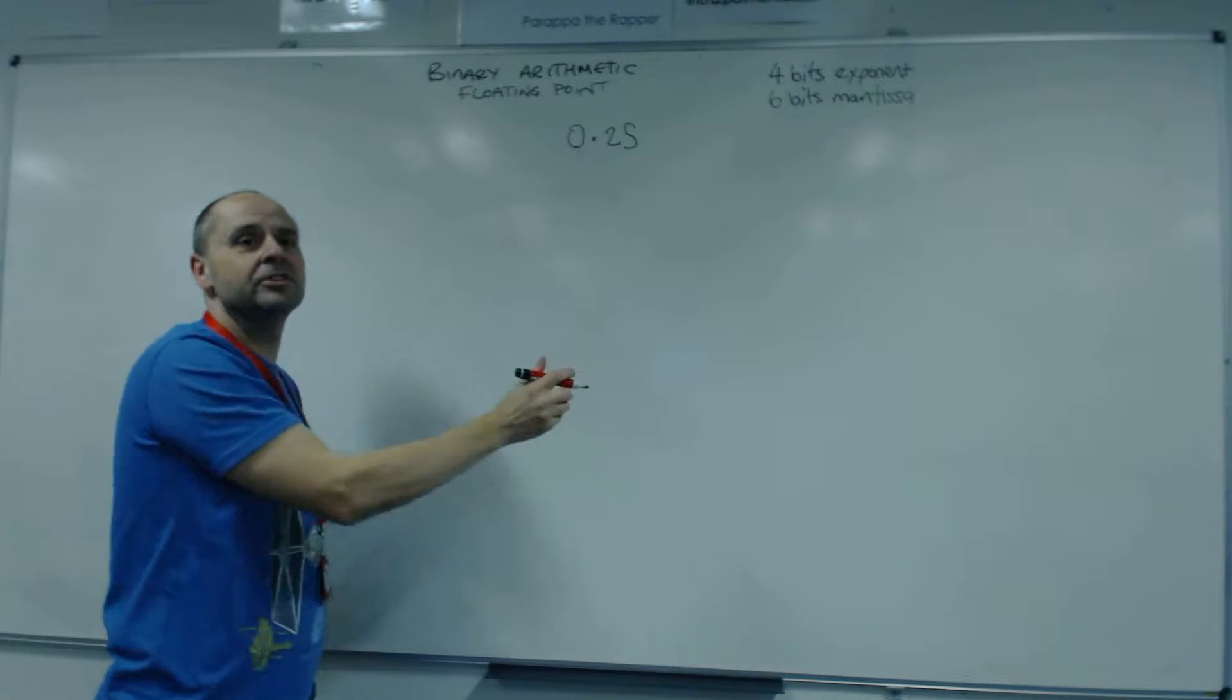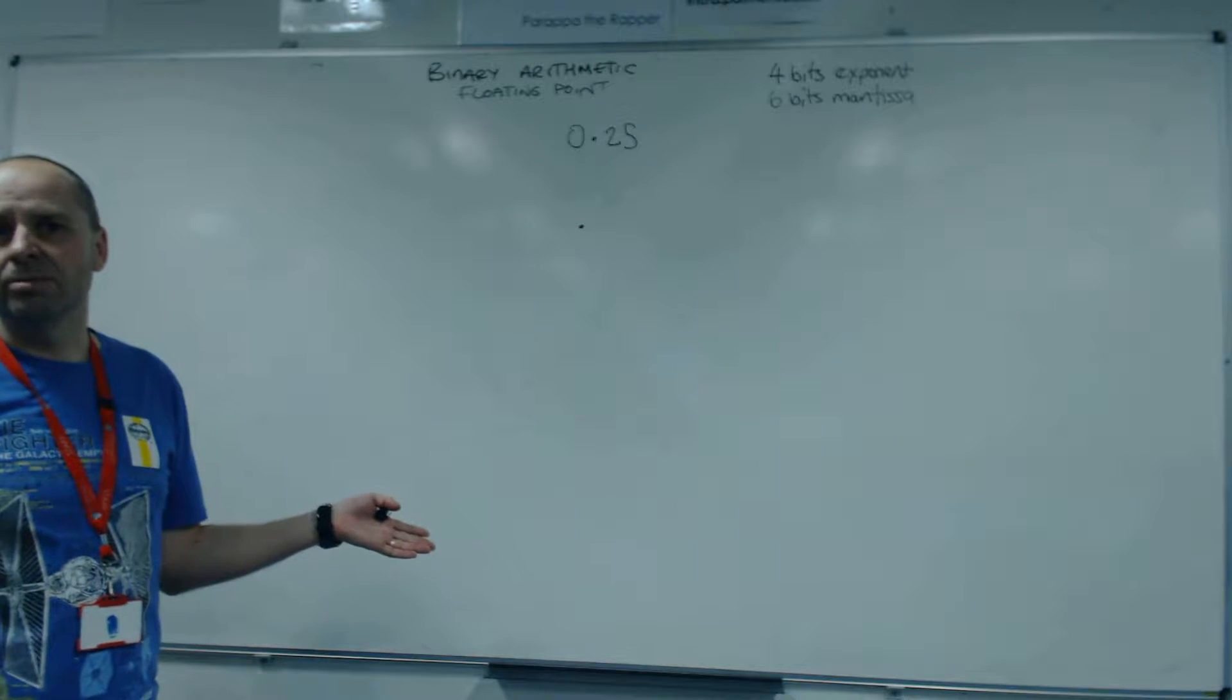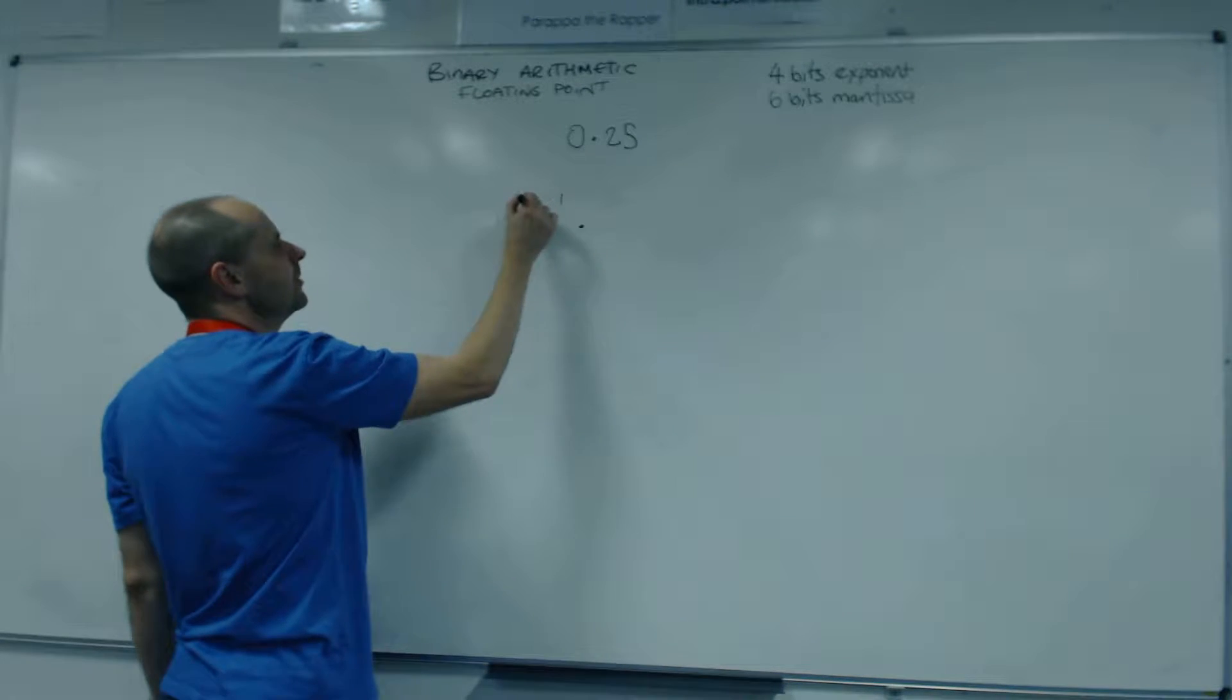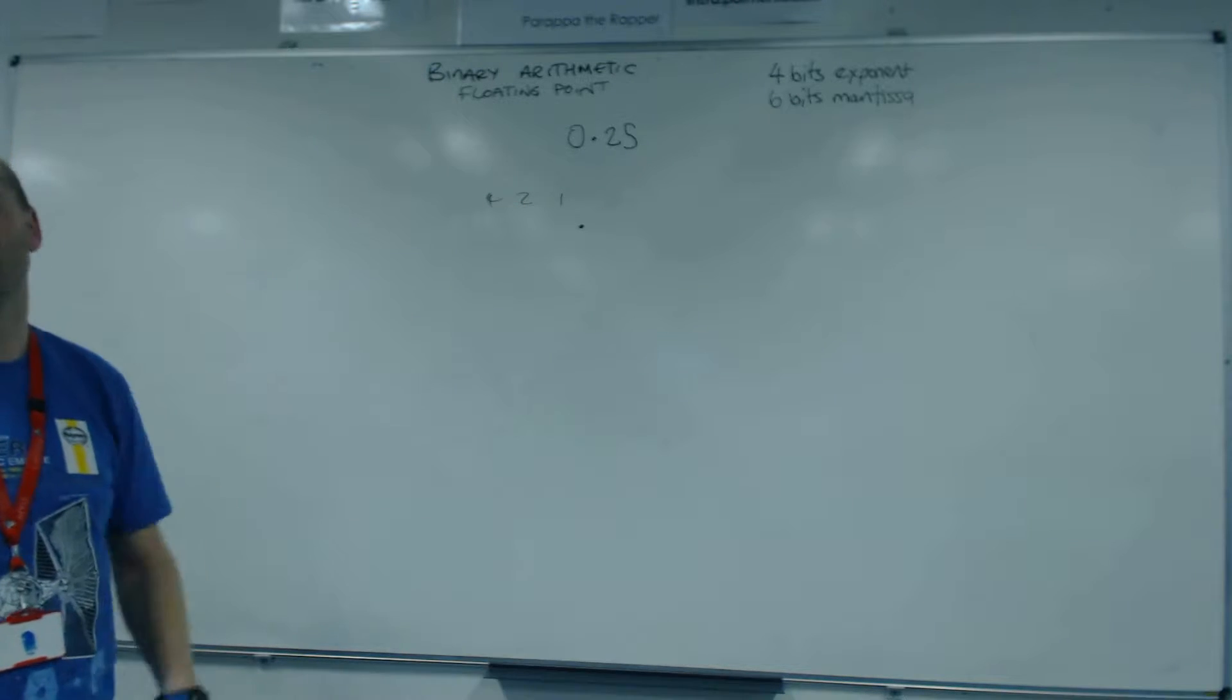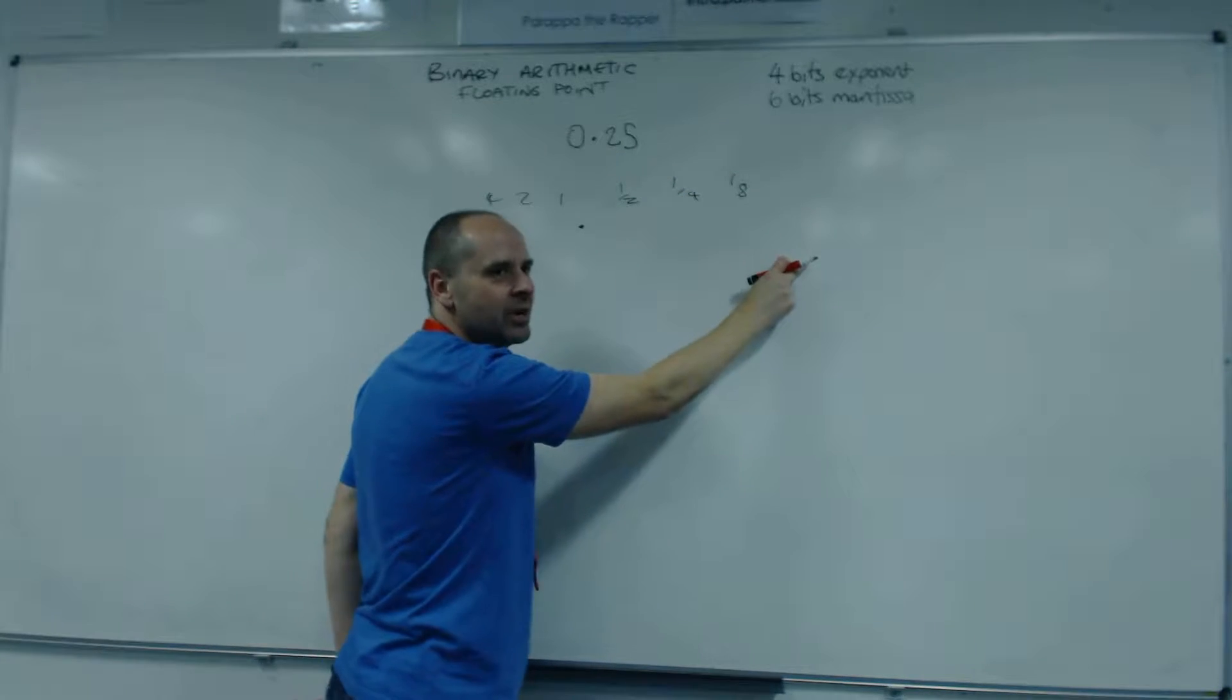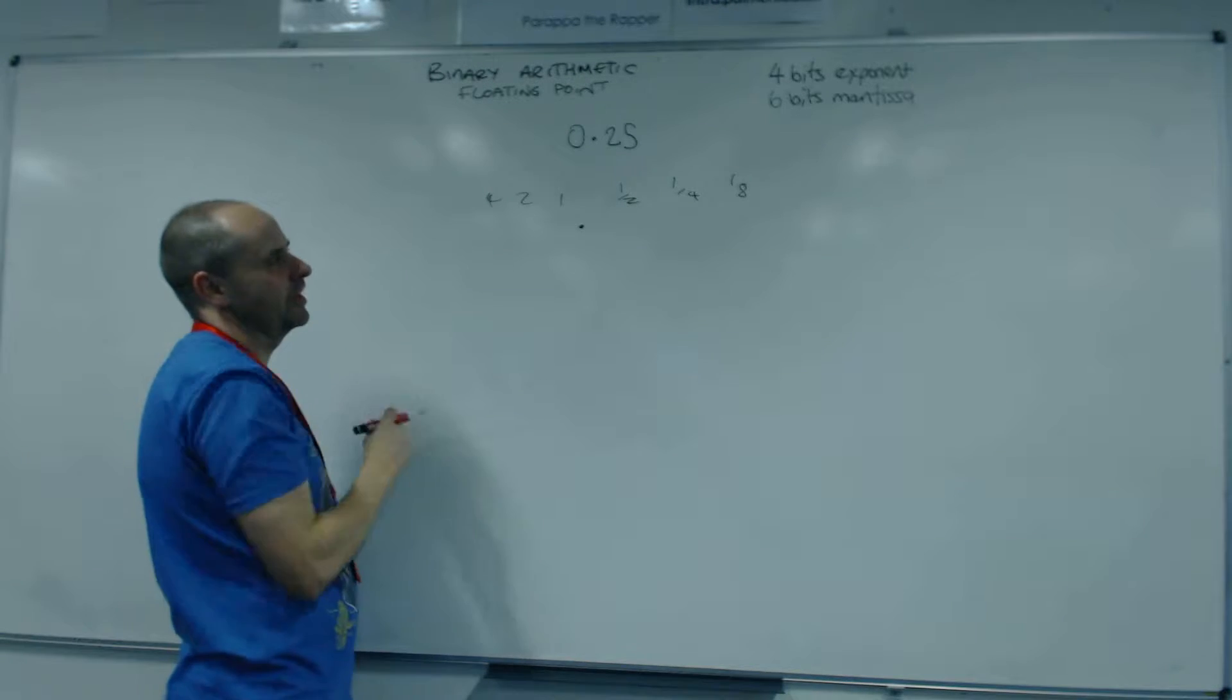So we want to write this down. So we start off and put the binary point. We're going to just do it in two's complement. So we need to make sure that we keep this number positive. So let's just put a few bits in for the integer part, even though there isn't one, and let's put some fractional ones in. Remember, as you go that way, you're dividing by two. If you go this way, you're multiplying by two.